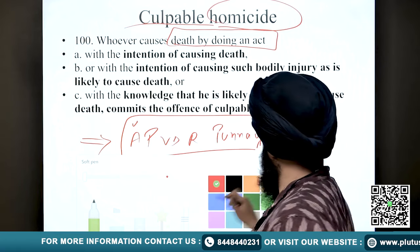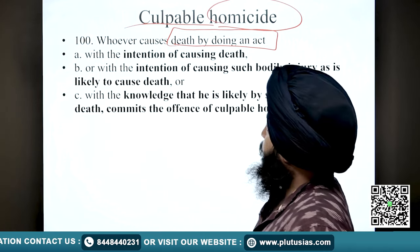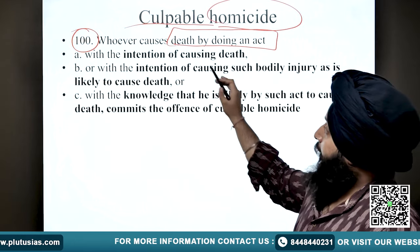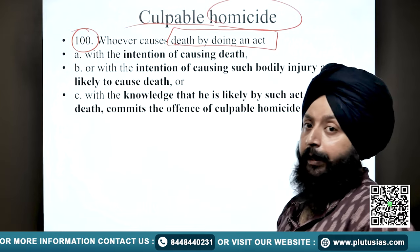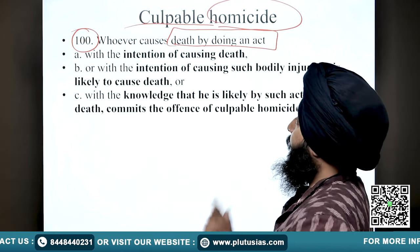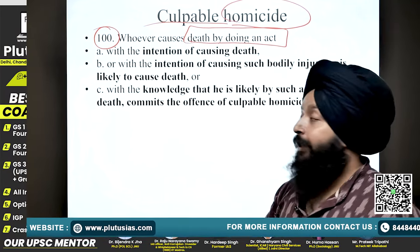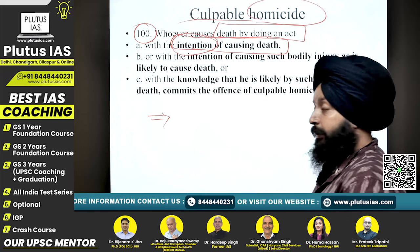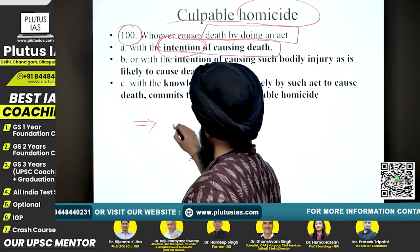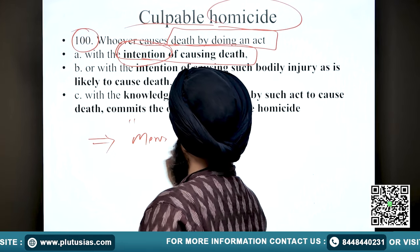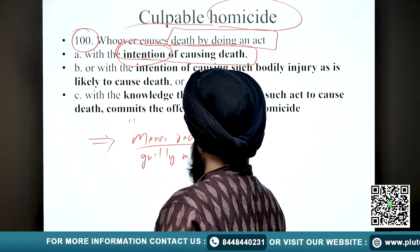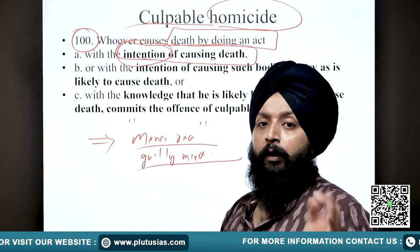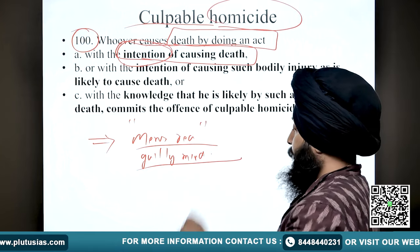The next step is to ascertain whether the ingredients of Section 100 (BNS) are being fulfilled or not - whether the facts and circumstances of the case are such that they invoke Section 100. The most important thing is intention. There is a concept of mens rea, that means the guilty mind. If a person has committed an act with a guilty mind, the act is an offense. If a person has committed an act without a guilty mind or mens rea, the act is not an offense.